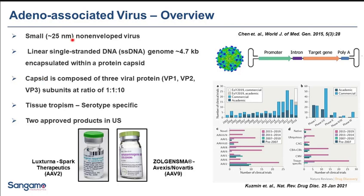AAV is a small, approximately 25 nanometer, non-enveloped virus. It encompasses a linear single-strand DNA with a genomic size of approximately 4.7 kilobases, encapsulated within a viral protein capsid. The capsid has icosahedral geometry. The DNA consists of an ITR region followed by a promoter, intron, and target gene of interest, followed by a poly-A tail and a second ITR. The capsid consists of three different viral proteins — VP1, VP2, and VP3 — at approximately a 1:1:10 ratio. Tissue tropism is generally serotype-specific.